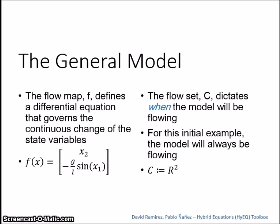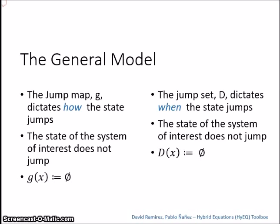The jump map G dictates how the state jumps. Because the system does not jump, the contents of G is insignificant.